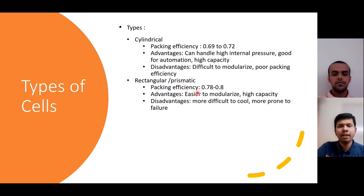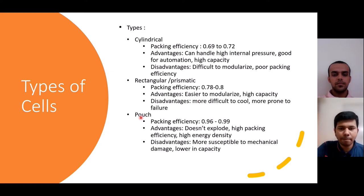After that comes the pouch type of cells. This has a high packing efficiency of around 0.96 to 0.99. As a result, they occupy less space and provide high energy density, but they are lower in capacity and more susceptible to mechanical damage.